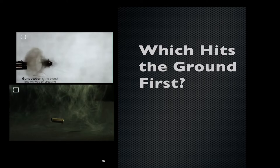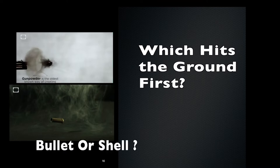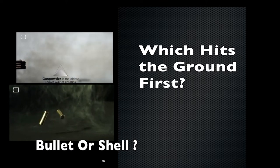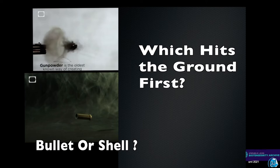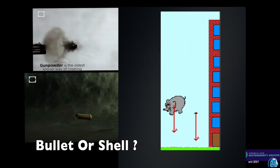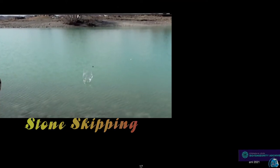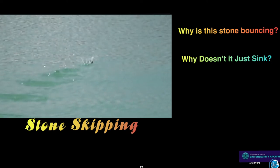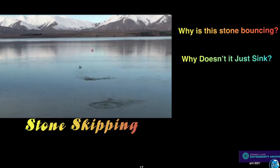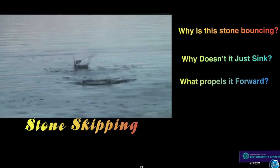Consider a bullet fired horizontally from a gun — which hits the ground first, the ejected cartridge or the bullet traveling on its horizontal path? They hit the ground at the same time, because the horizontal speed of the bullet has nothing to do with the vertical forces pulling the bullet to the ground. Similarly, a stone skipping on water: there is a horizontal force that propels it, and slight bounces off the water delay sinking, but drag slows it until forward motion stops and it finally sinks. With no drag, the forward motion would continue indefinitely.